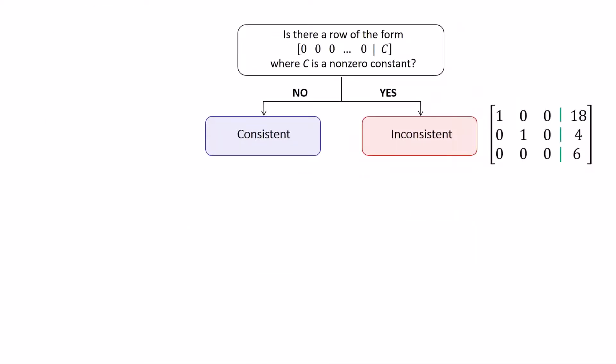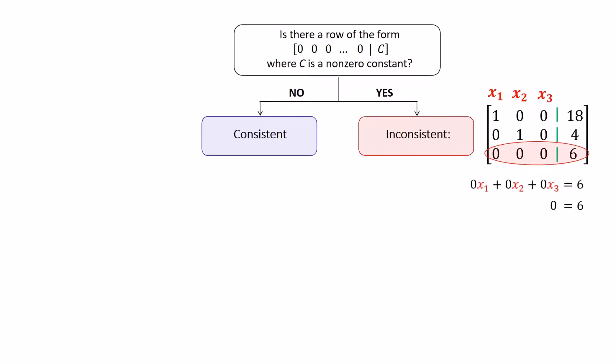Here's an example of the RREF of the augmented matrix of an inconsistent system. Notice that in row 3, all entries corresponding to the variable's coefficients are zeros, while the entry corresponding to the constant is 6. Recall that each column of the augmented matrix corresponds to the numerical coefficients of the variables in the system. So if we convert row 3 to an equation, we get 0 equals 6, which is clearly not true. Therefore, the system has no solution.